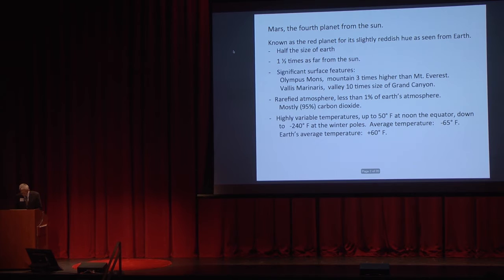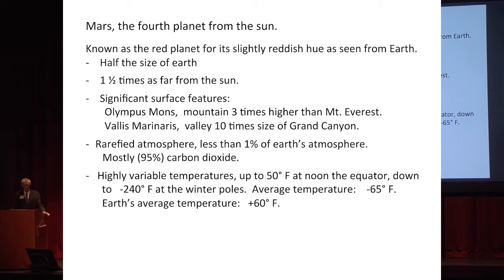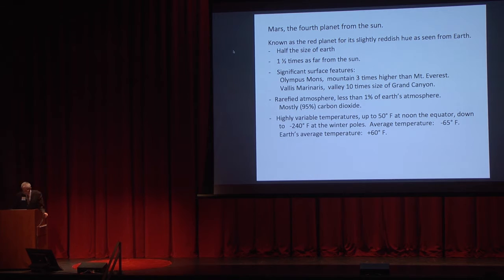Let's take a little trip to Mars, the fourth planet from the Sun. That follows Mercury, Venus, Earth, and then Mars. Mars is known as the red planet for its slightly reddish hue as seen from Earth. It's about half the size of Earth, but it's one and a half times as far from the sun, so it gets a lot less sunlight than we do here at Earth.